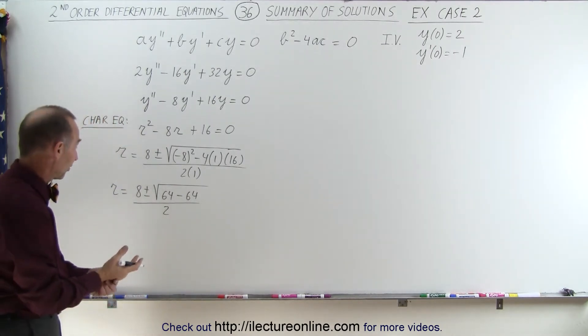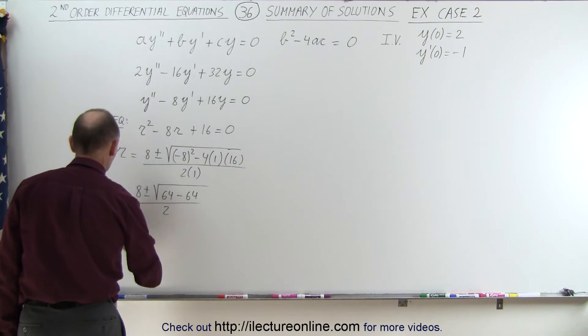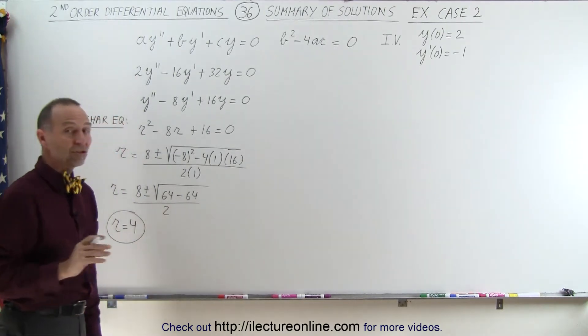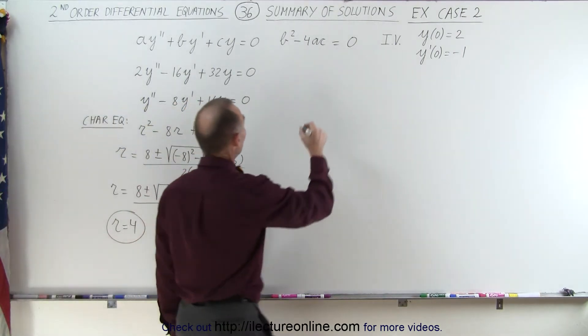And then notice, of course, 64 minus 64 is zero, and 8 divided by 2 is 4. So the root in this case is a single root equal to 4, which means the general equation or the general solution to that differential equation is as follows.